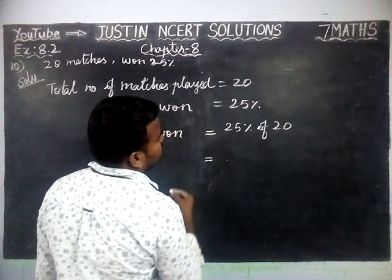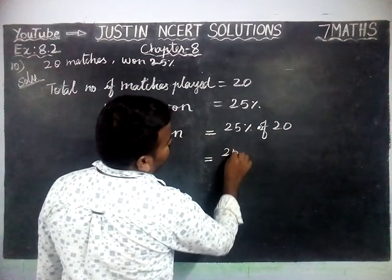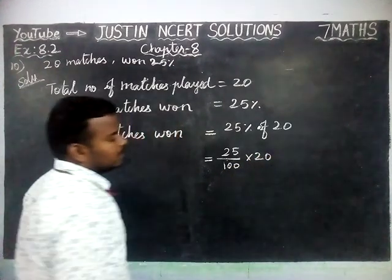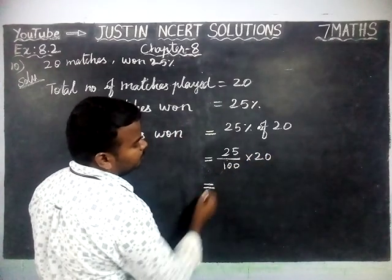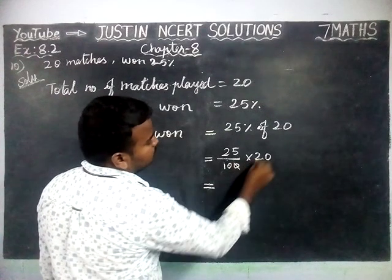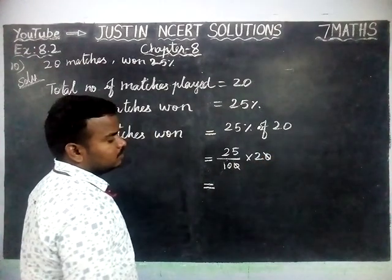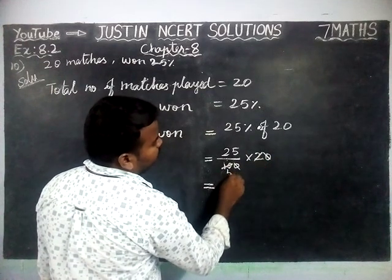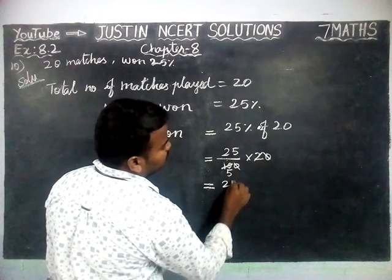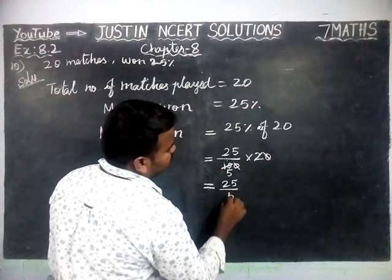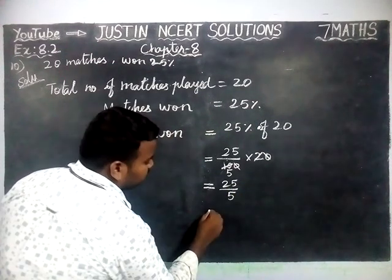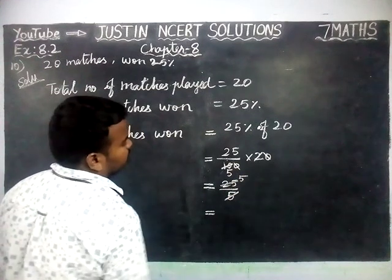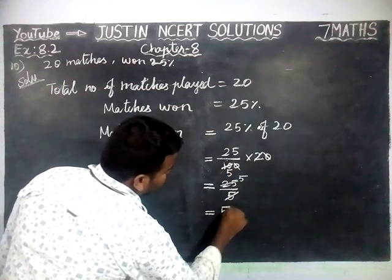This is equal to 25 divided by 100 into 20. Now we are going to simplify. The zeros get cancelled, leaving 25 divided by 5. We can simplify by 5, giving us 5. So, matches won equals 5 matches.